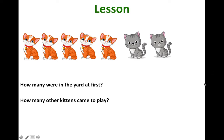Before we start solving our problems, let's answer these questions first. How many kittens were in the yard first? We're just talking about the orange kitten. How many orange kittens were there in the yard first? So let's count. One, two, three, four, five. So let's see if the answer is five. That's correct. The answer is five.